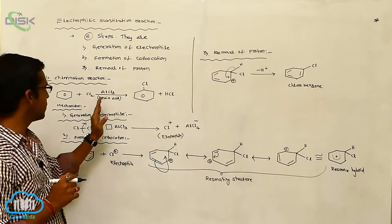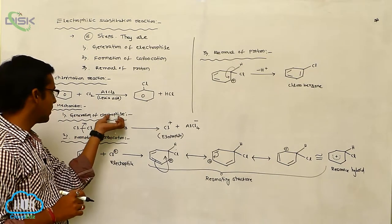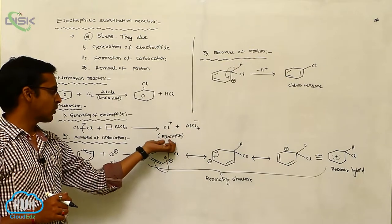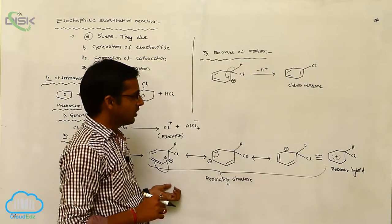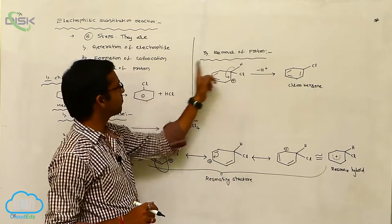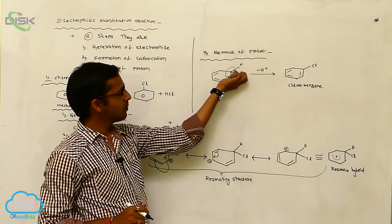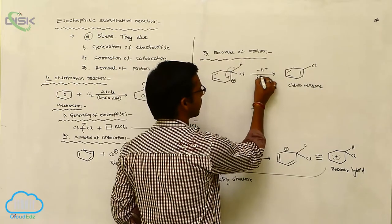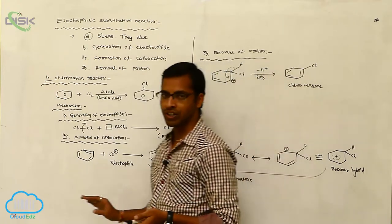In summary, the chlorination reaction mechanism has three steps: first, Generation of Electrophile — Cl+ is generated from the Lewis acid; second, the Cl+ electrophile attacks benzene, showing various resonating structures, and we write the resonance hybrid; third, Removal of Proton — the sigma bond proton leaves from the ring, and the loss of proton forms Chlorobenzene.